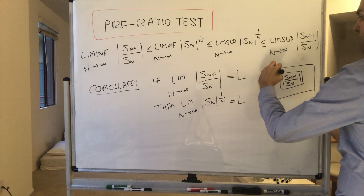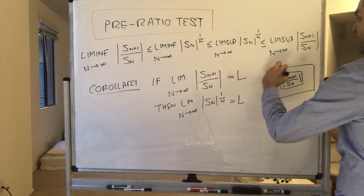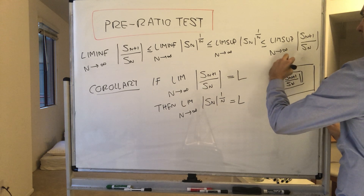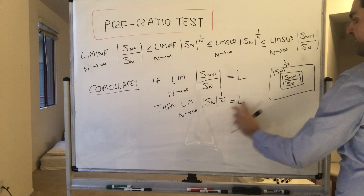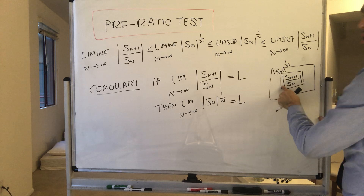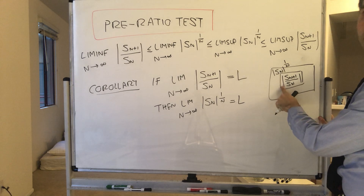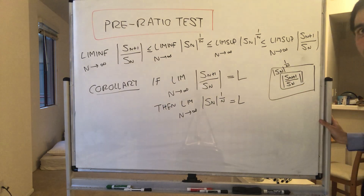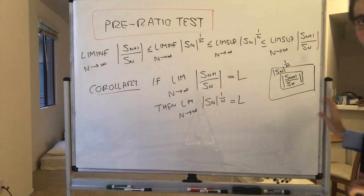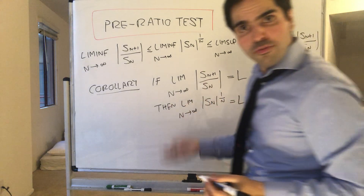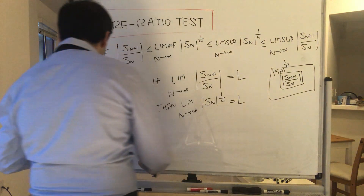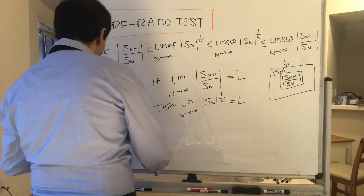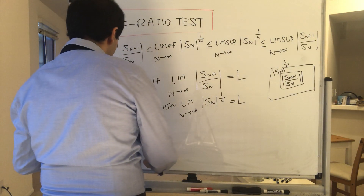However, there might be cases where the limit of the root test exists but where the limit of the ratio test doesn't exist. Let me quickly show the corollary, then I will show the actual proof.